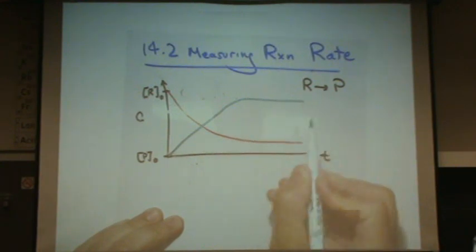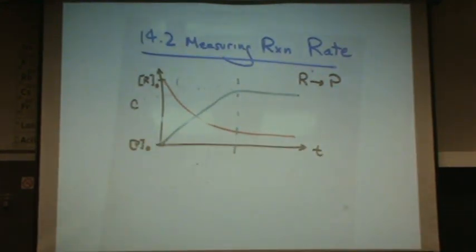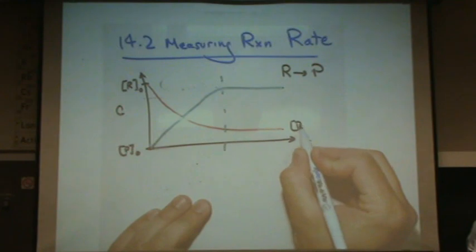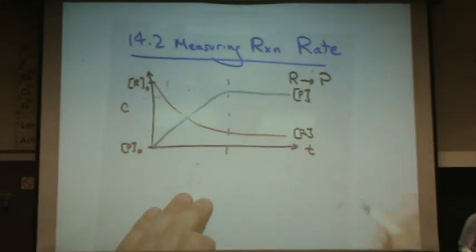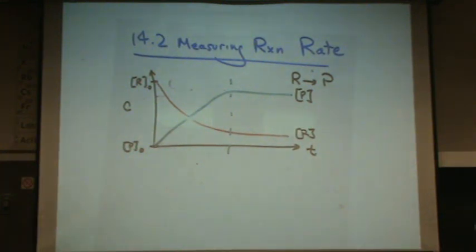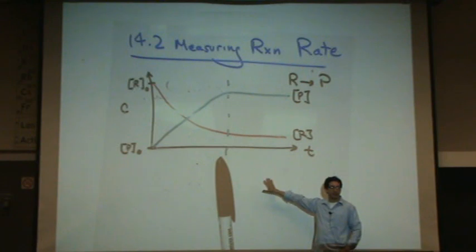And both of them at some point level off. We're not going to worry about that too much right now. But let me label this. So this is the current concentration of R and the current concentration of P. Does anybody know or remember after this point on the right hand side, what is this state called? This is equilibrium. So we studied equilibrium already.